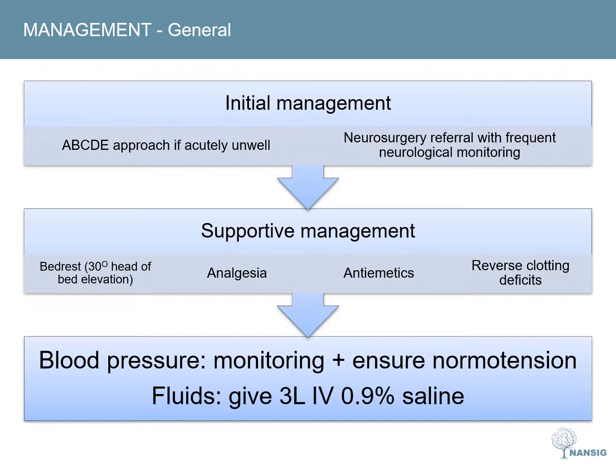Patients will often receive 125 mls per hour of normal saline. However, patients who have cardiac failure would be at risk of pulmonary oedema with this, and the fluid rate can be modified in such circumstances.